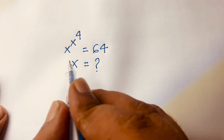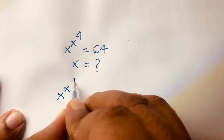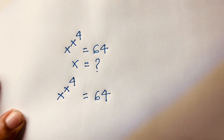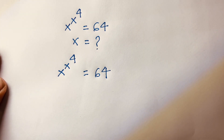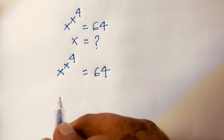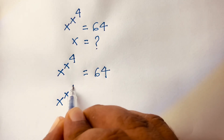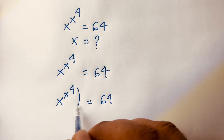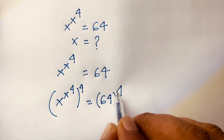Here we have x to the power x to the power 4 is equal to 64. I will apply a power of 4 to both sides. So it becomes x to the power x, raised to the power 4, and on the right side 64 raised to the power 4.